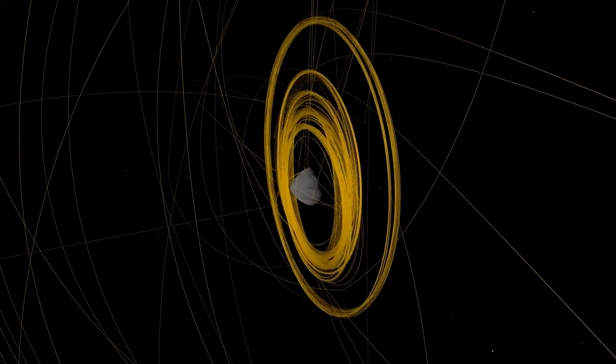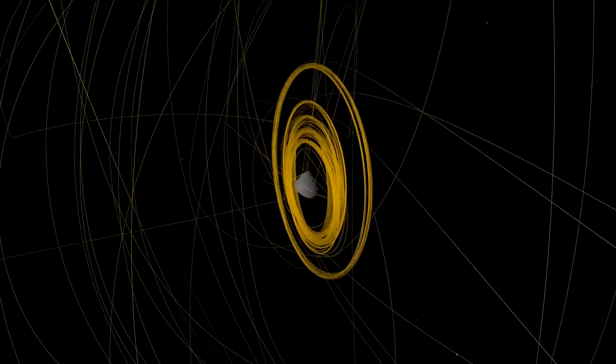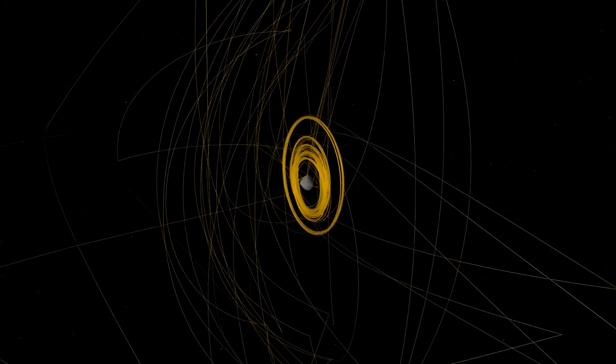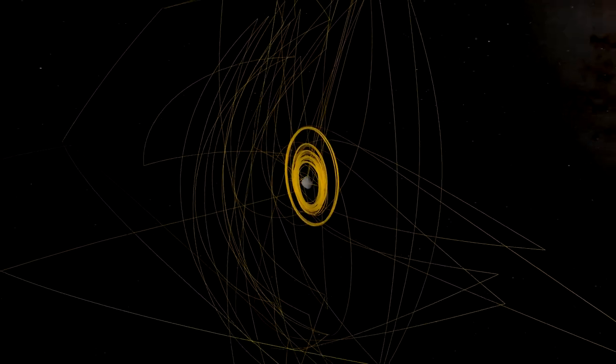Following TAG, the spacecraft drifted to a safe distance away from Bennu. By the end of October, mission controllers determined that it had exceeded its goal of collecting 60 grams of asteroid material.